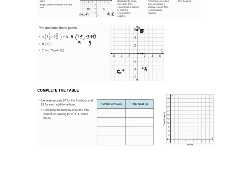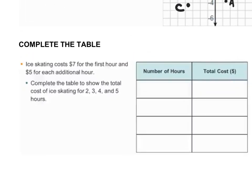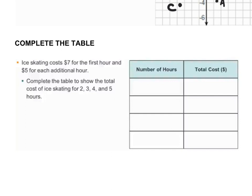Let's think of a real world example. We want to complete this table: ice skating costs $7 for the first hour and then $5 for each additional hour. We want to find the total cost for 2, 3, 4, and 5 hours. We're comparing two things — the number of hours and determining the total cost based on how many hours we're ice skating.